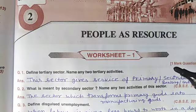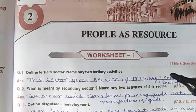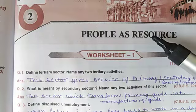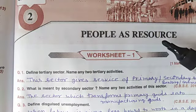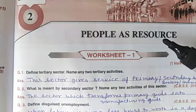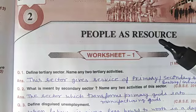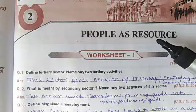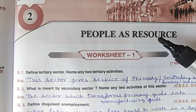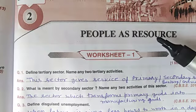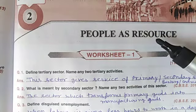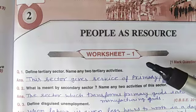Hello dear students, welcome to all of you in the ninth chapter of economics: People as Resource. People as resource means the real strength of the country. People become resource when they get education, training, good health, knowledge and efforts. So today we are doing worksheet number 1, very short questions from this chapter.